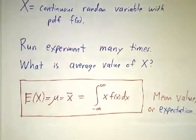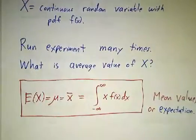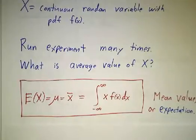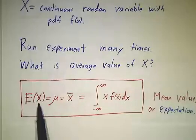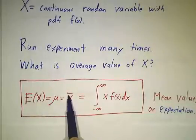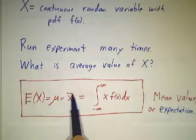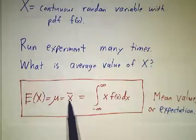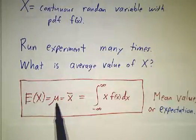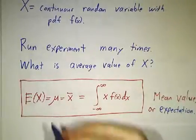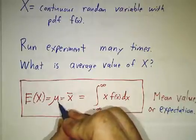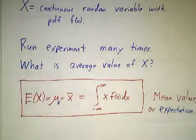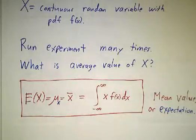There are a lot of different notations for this. It's called the mean value or the expectation. One notation is E of x, meaning the expectation of x. x-bar is another notation — putting a bar over a random variable usually means its average. The Greek letter mu is often used to denote these averages, and you put a subscript x to indicate the average value of x, so another variable y would have average mu sub y.